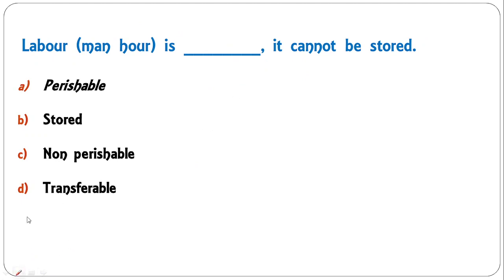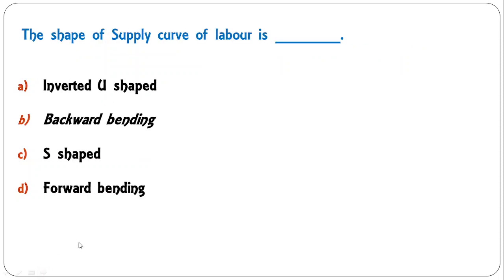Labor or man-hour is dash — it cannot be stored. Options: perishable, stored, non-perishable, transferable. The correct answer is perishable. Labor cannot be stored, and neither can it be transferred from one person to another or from labor to machine.